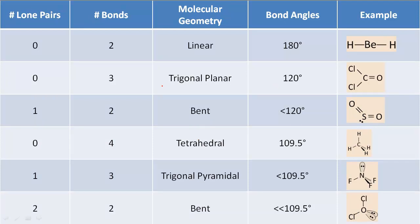If something has zero lone pairs and two bonds, it is most likely going to form a linear shape, or molecular geometry. The bond angle is 180 degrees — the angle of a line. BeH2 is an exception to the octet rule because it only has two hydrogens bonded to it. Those orbitals want to be as far apart from each other as possible, and the best way to do that is to be at 180 degrees apart.